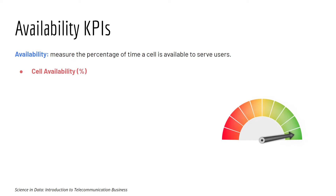Availability KPI measures the percentage of time a cell is available to serve users. This is often measured during the peak hour or busy hour.